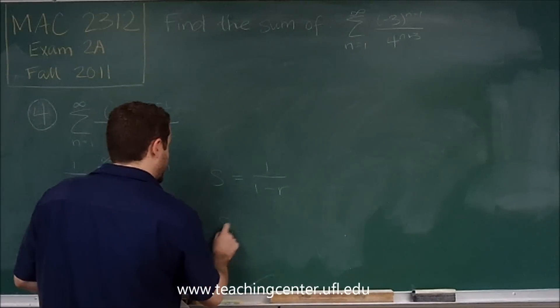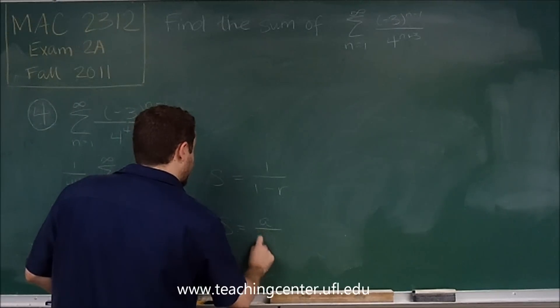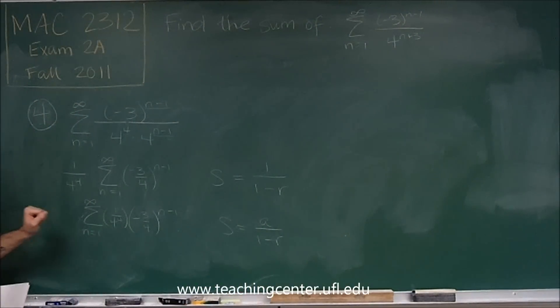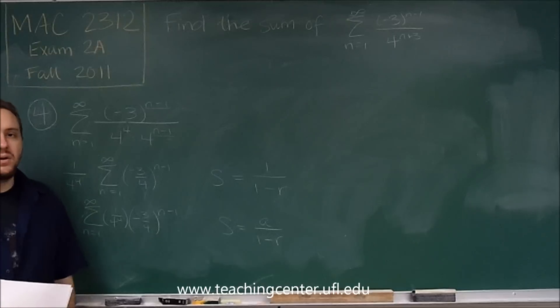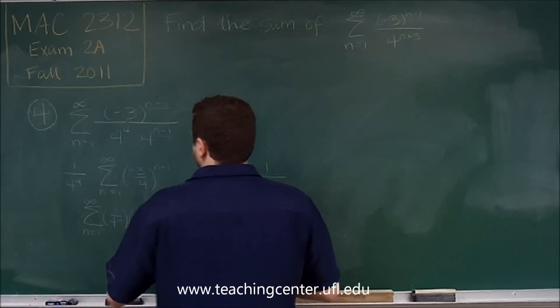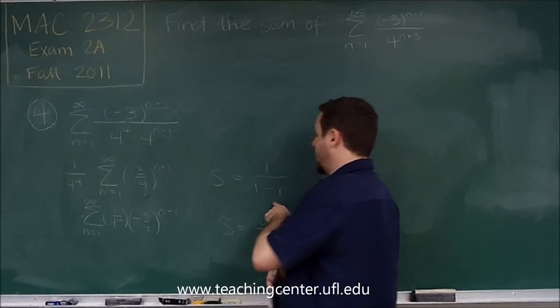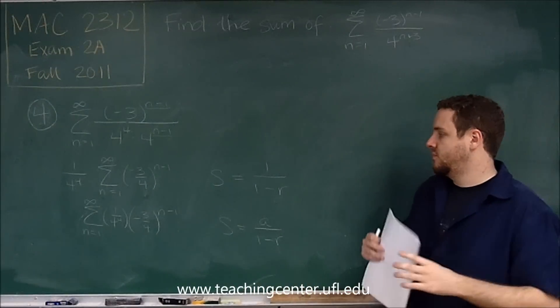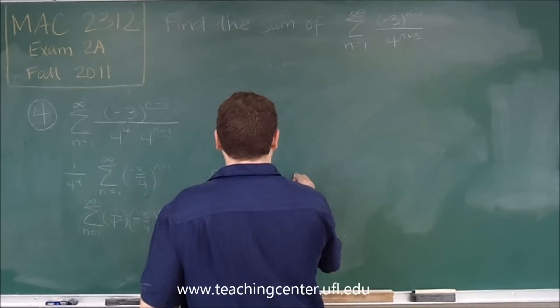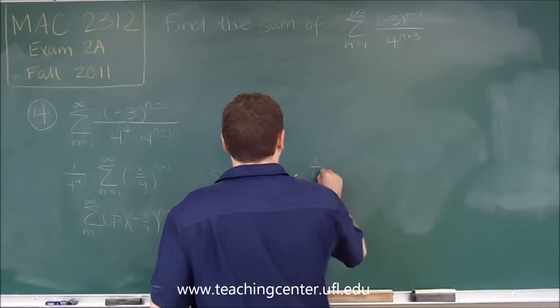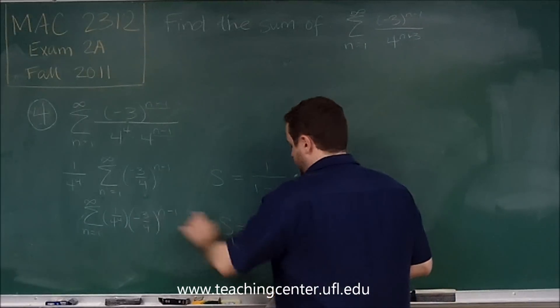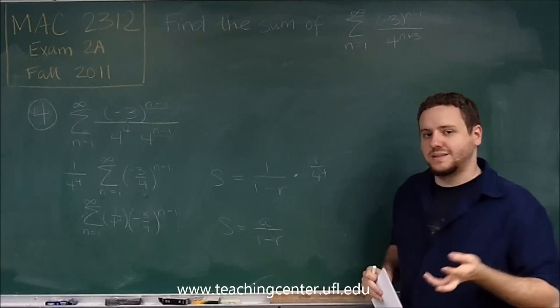Or, if you prefer, it's a over one minus r, where a is the value of that constant that's multiplied times your geometric series term. You can see here, if we just treated this and used the formula one over one minus r, and then multiplied it by one over four to the four, that's the same thing as putting the a, one over four to the four, and multiplying it there, it's the same thing.